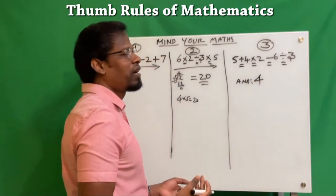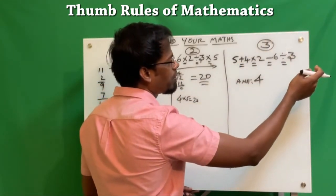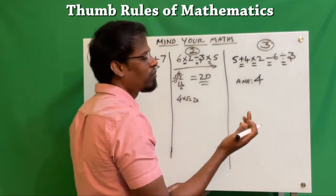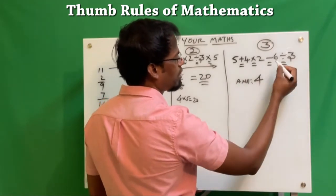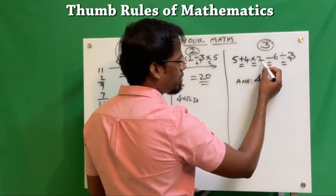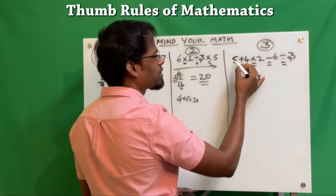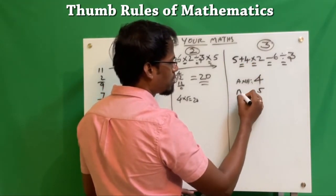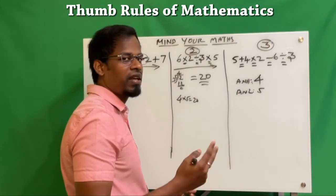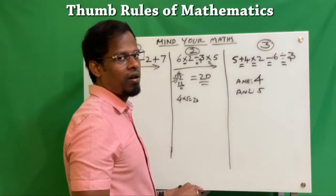Others might say: since all four operations are there, let's go right to left. So 6 divided by 3 is 2, 2 minus 2 is 0, 0 times 4 is 0, 0 plus 5 is 5. Answer two is 5. But one equation cannot have two answers — so both methods are wrong.